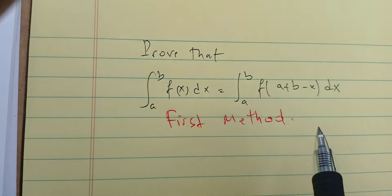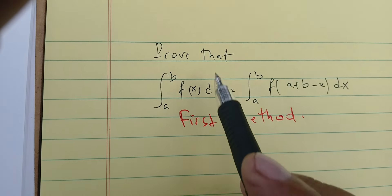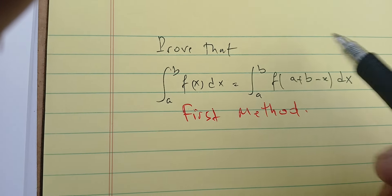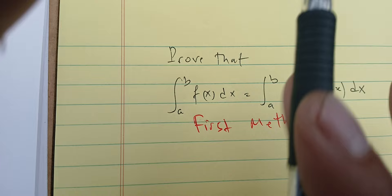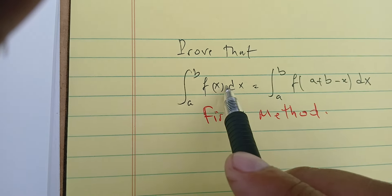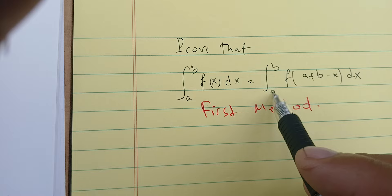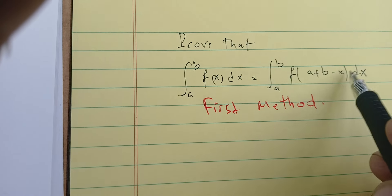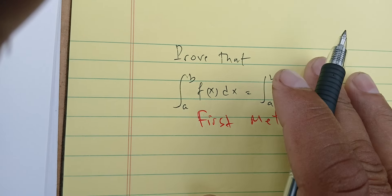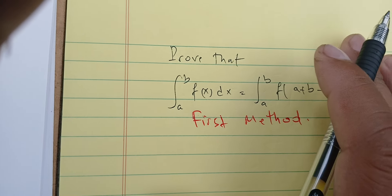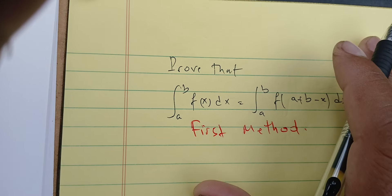In this video we're going to prove the following result: the integral of f between a and b is the same as the integral between a and b of f of a plus b minus x. We can prove this using a change of variable; we're going to do it later using geometry as well, to see why these two are the same.